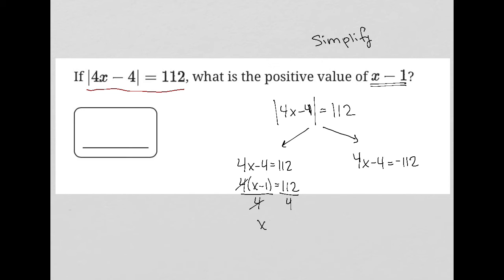I can divide both sides by 4, and therefore x minus 1 is equal to 28 — let's just confirm with a calculator: 112 divided by 4 is 28. And that's a positive number, so I know that this is my correct answer.